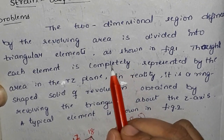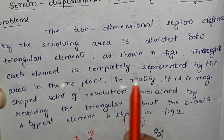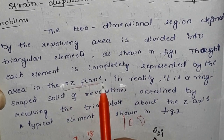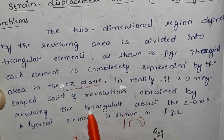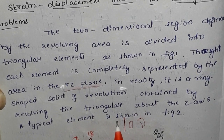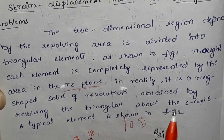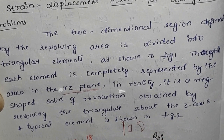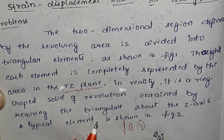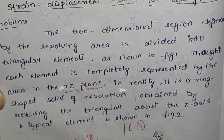Here we have Figure 1, through which each element is completely represented. We convert the area to the RZ plane. It is a ring-shaped solid of revolution obtained by revolving the triangle about the Z axis. We have R replacing X, and Z replacing Y. We consider the RZ plane with the Z axis and the R direction.